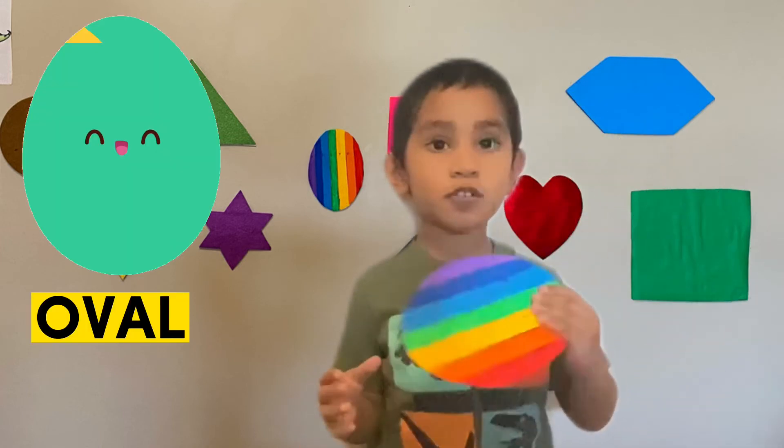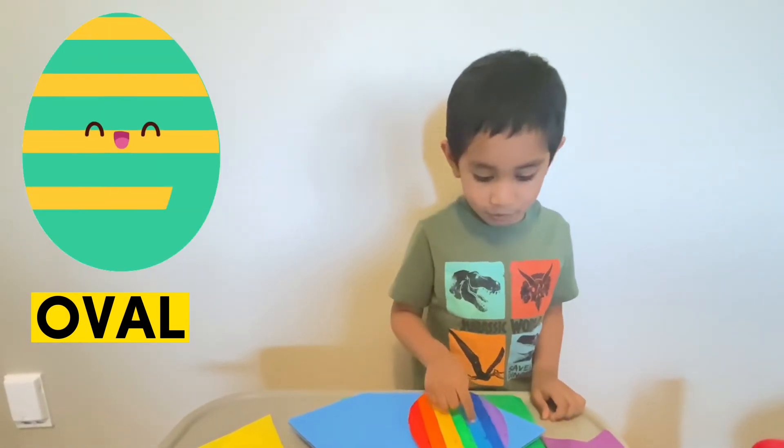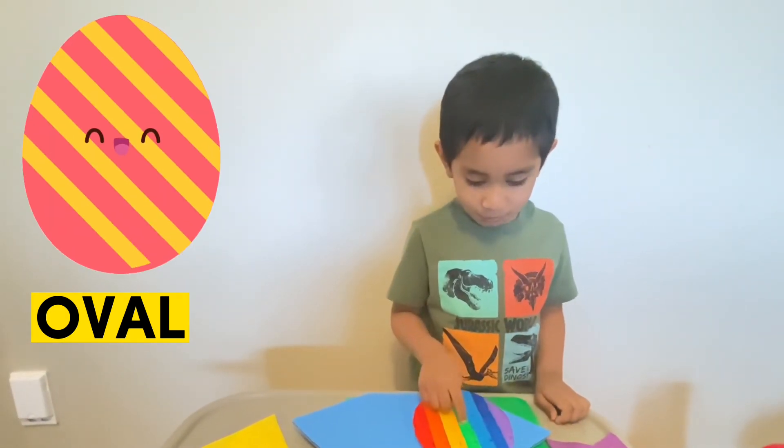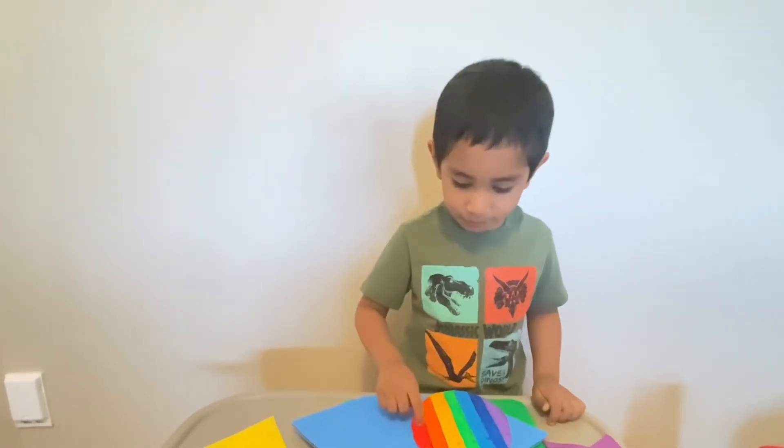Rainbow oval. Violet, indigo, blue, green, yellow, orange, red.